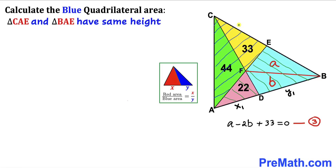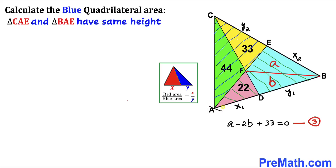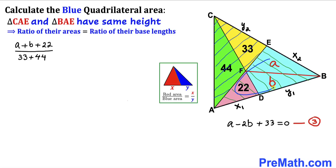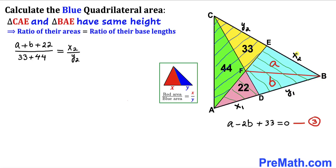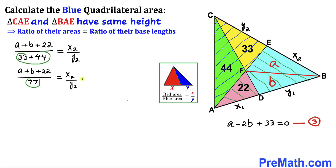Let's focus on triangles CAE and BAE. Assume the base of triangle BAE is X2 and the base of triangle CAE is Y2. Both triangles have the same height, so the ratio of their areas equals the ratio of their base lengths. The ratio is (A + B + 22) / (33 + 44) = X2 / Y2, which simplifies to (A + B + 22) / 77 = X2 / Y2. Let's call this Equation 4.